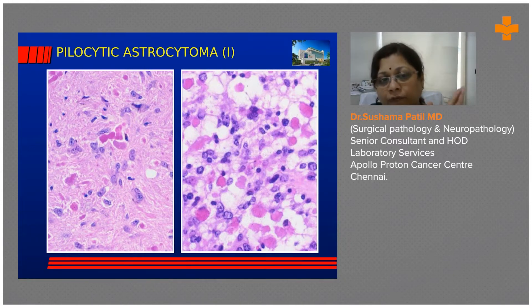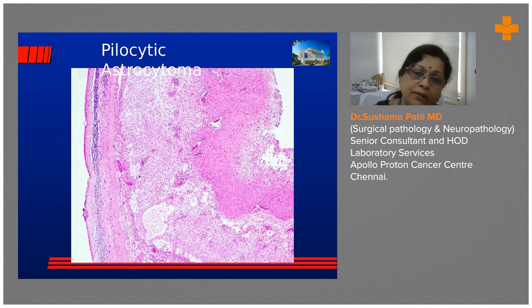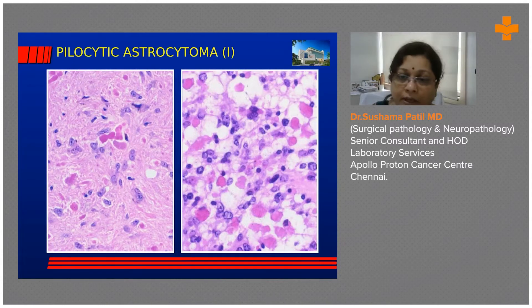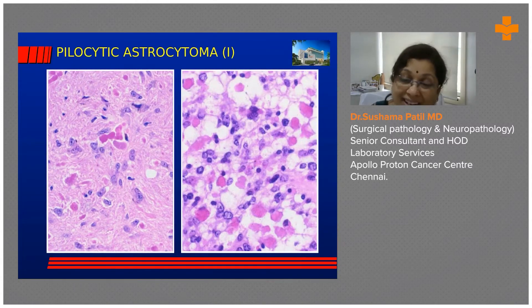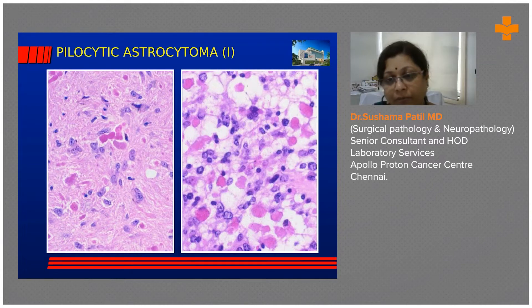The histological differential diagnosis for pilocytic astrocytoma is essentially oligodendroglioma, because in the lighter areas, a needle biopsy could lead you to call it an oligo. This is why imaging is so important — you go back and look: it does not look anything like an oligo. We have a cyst with a mural enhancing nodule, a classic child cerebellar location, and this morphology. It has to be pilocytic astrocytoma, a grade one tumor.